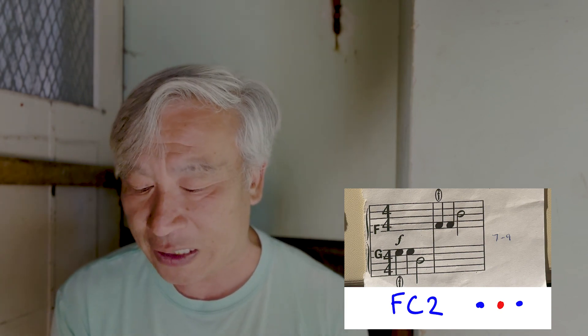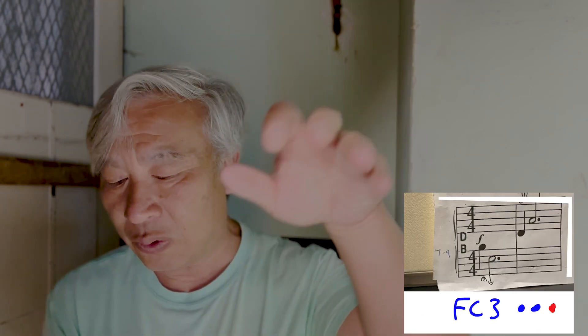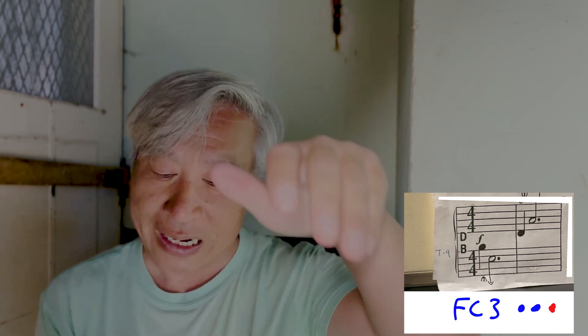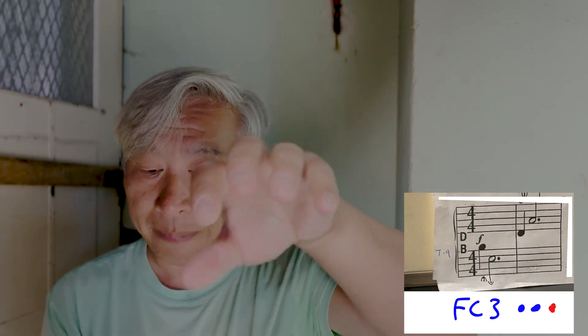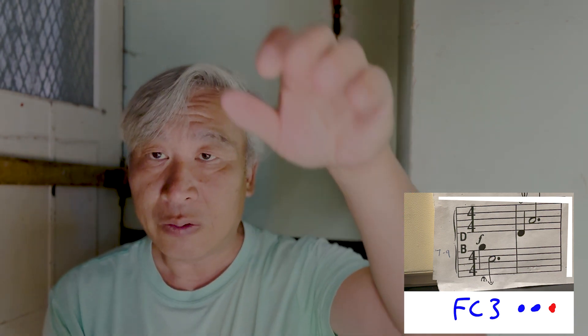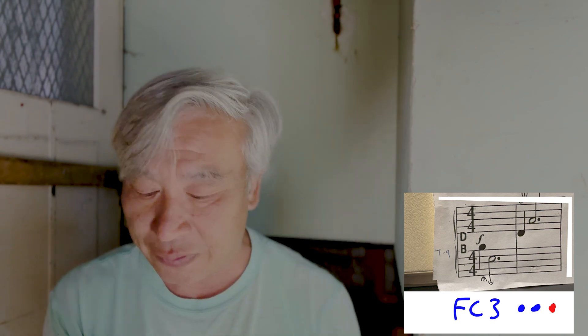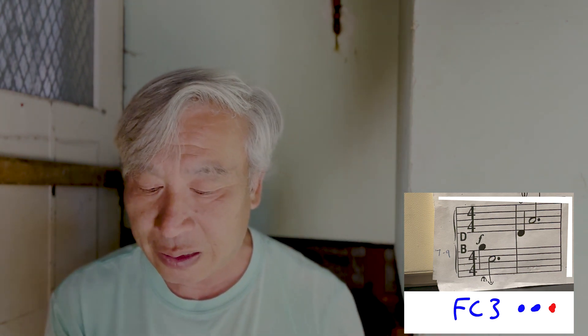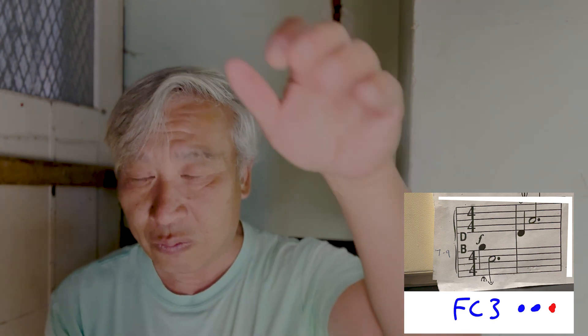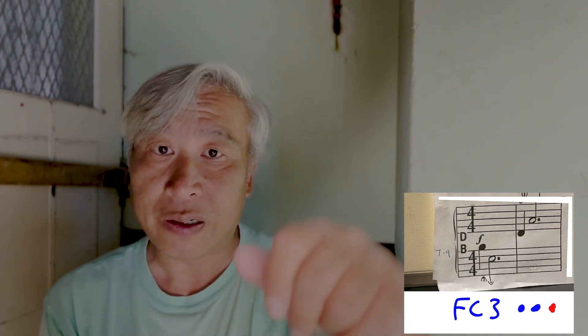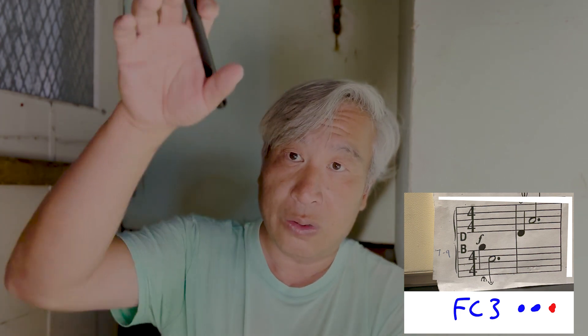FC3: you can tell it's a fifth because it's space, space, space. Lower hand — the upper hand is on B and you go down a fifth. One beat and then three beats — that's four beats altogether. So one, two, three, four. And the upper hand is on D and then it goes one, two, three, four.